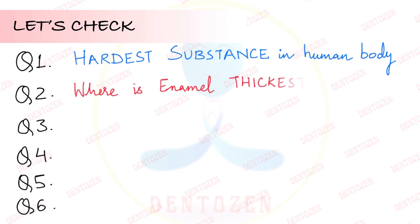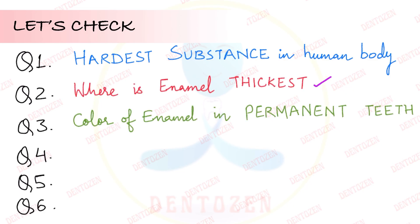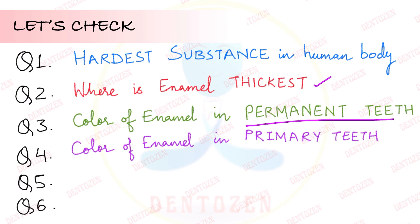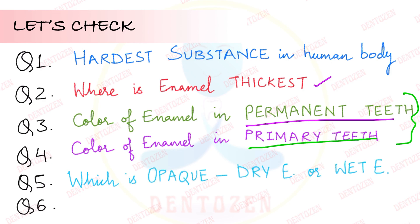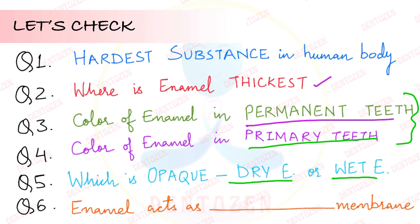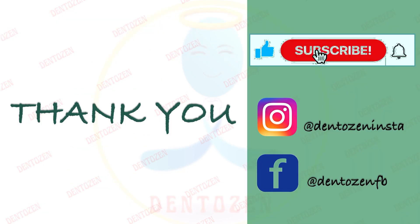Quick review questions: Which is the hardest substance in the human body? Where is enamel thickest in permanent teeth — cuspal or cervical region? What is the color of enamel in permanent teeth? In primary teeth? Why this difference? Which is more opaque — dry enamel or wet enamel? In terms of permeability, what kind of membrane does enamel act as? That's all for this video — if you learned something new, tap the like button, share with your friends, keep learning, and good luck for your exams!